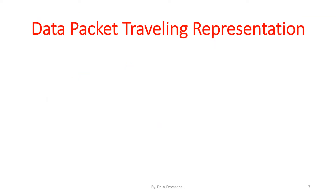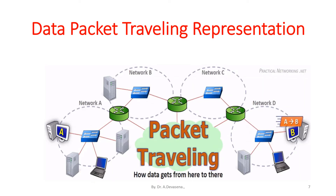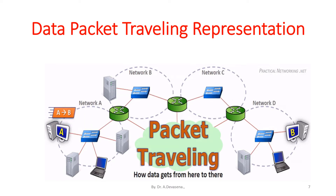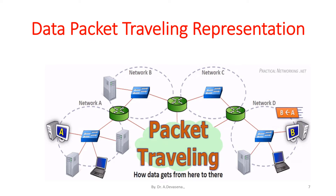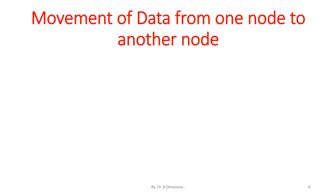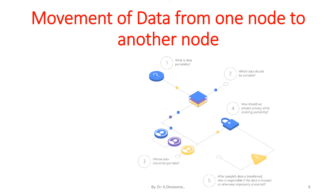Data packet traveling representation is shown here. In this diagram, data is available from node A and it has to reach node B. It takes a specific path to reach node B. Similarly, from node B it has to reach node A. In this prescribed direction, the data travels from node A to B and from node B to node A. Movement of data from one node to another node is represented here.